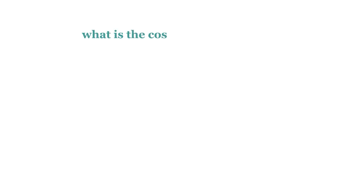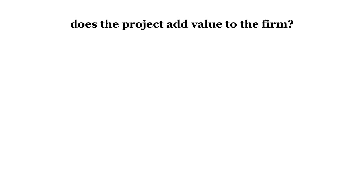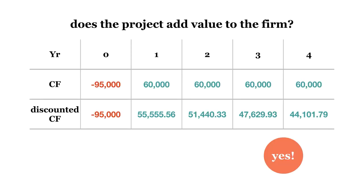What is the cost to the firm today if the project is accepted? The cost of the project, if accepted, would be $95,000. Does the project add value to the firm? Yes, this project would add value to the firm. Considering the cash flows of the project and the cost of the project, there is a positive net present value.